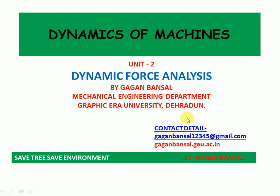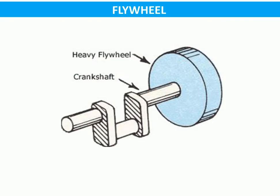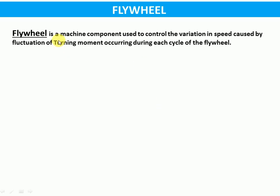Hello everyone, continuing with Unit 2 on dynamic force analysis. In this session we will be discussing the flywheel. A flywheel is a machine component used to control the variation in speed caused by the fluctuation of turning moment occurring during each cycle. The flywheel acts as a reservoir of energy — when the supply is more than the requirement, the flywheel stores energy, and when the requirement is more than the supply, it releases energy.